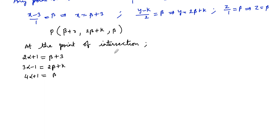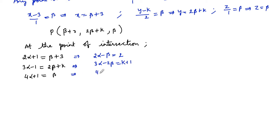Rearranging these equations: equation 1 gives 2α−β = 2; equation 2 gives 3α−2β = k+1; and equation 3 gives 4α−β = −1. Label these as equations 1, 2, and 3, and solve equations 1 and 3.